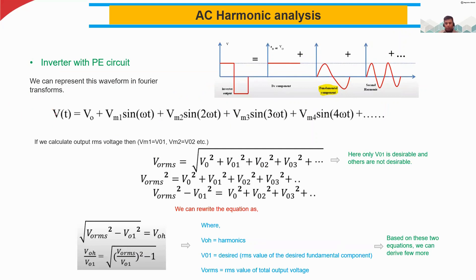The total output voltage v(t) is equal to V₀ plus Vm1·sin(ωt) plus Vm2·sin(2ωt) plus Vm3·sin(3ωt) plus Vm4·sin(4ωt) plus Vm5·sin(5ωt), and so on. These are the harmonics.